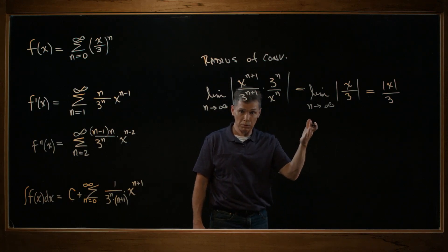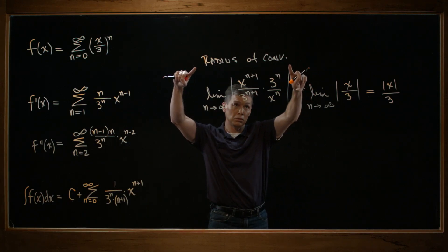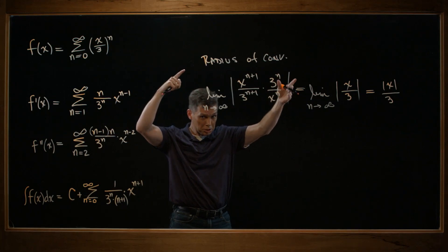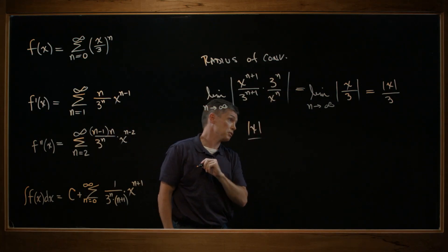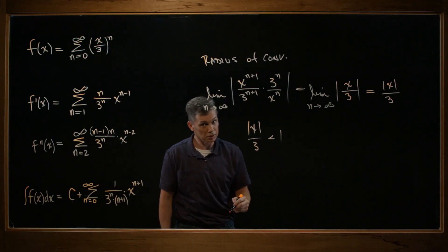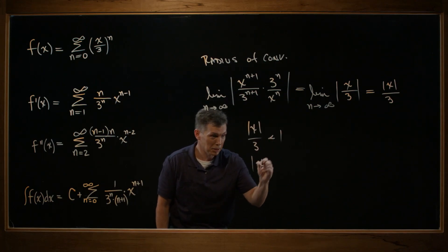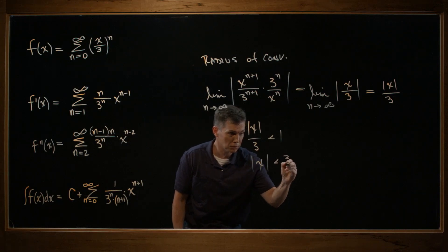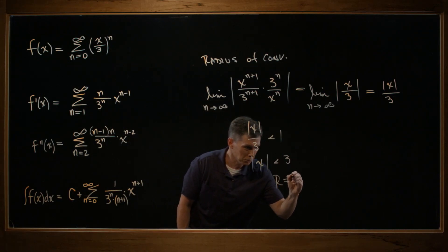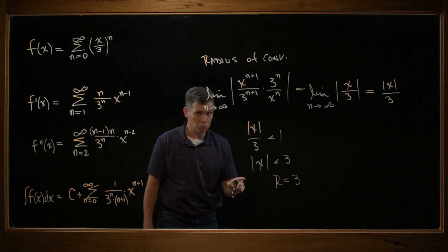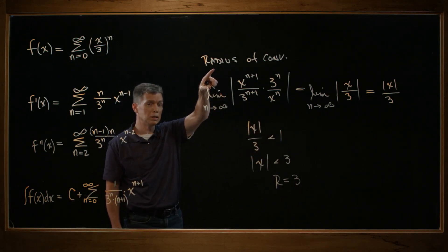And we do these limits when we're doing a radius of convergence problem. Because we're doing a ratio test and we want convergence, which means the answer to the limit needs to be less than 1. Which means the absolute value of x needs to be less than 3. Which means r equals 3. That's the work I had to do just to determine the radius of convergence.